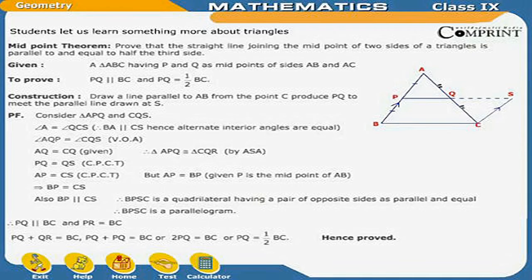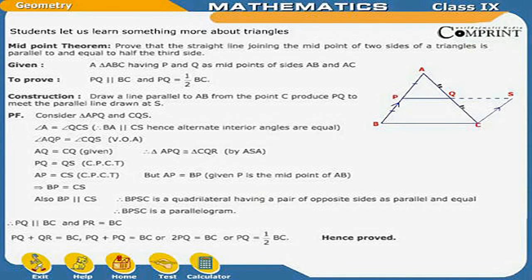But AP is equal to BP, since P is the midpoint of AB. This implies BP is equal to CS. Also, BP is parallel to CS. Therefore, BPSC is a quadrilateral having a pair of opposite sides both parallel and equal. Therefore, BPSC is a parallelogram. Therefore, PQ is parallel to BC.